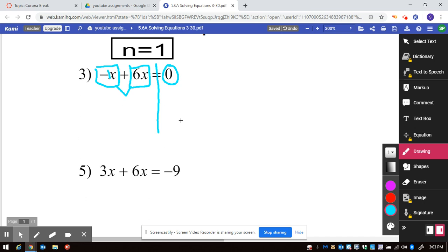We have to do something called combine like terms. To do so, you keep the x but then you just add and subtract the whole numbers in front, because if you do negative 1 plus 6, that's 5, or 6 minus 1, still 5. Don't forget your equal sign in the middle and the 0 just drops down.